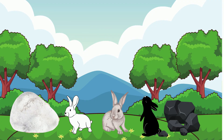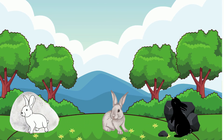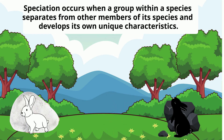Because the white and black colors can camouflage on the white and black rocks, the extremes will be selected for, and the average color will be selected against. Over time, this type of selection can lead to speciation.